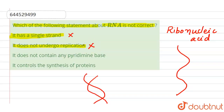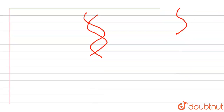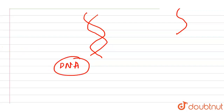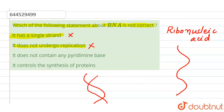The next statement is: RNA doesn't undergo replication. This is also correct, so it will not be our answer. Replication is the process by which two identical copies are formed. This is done by the DNA — it's the main property of DNA that it undergoes replication, but RNA doesn't undergo replication.